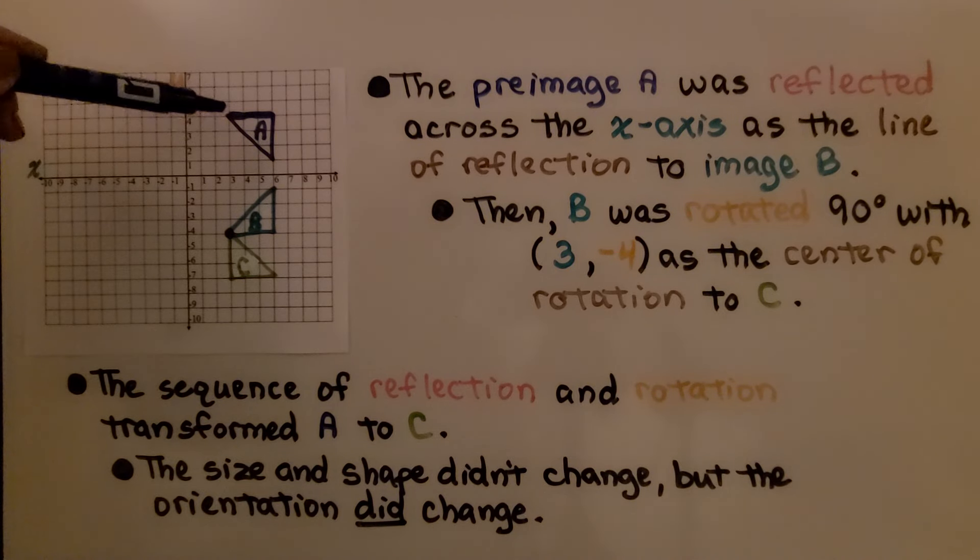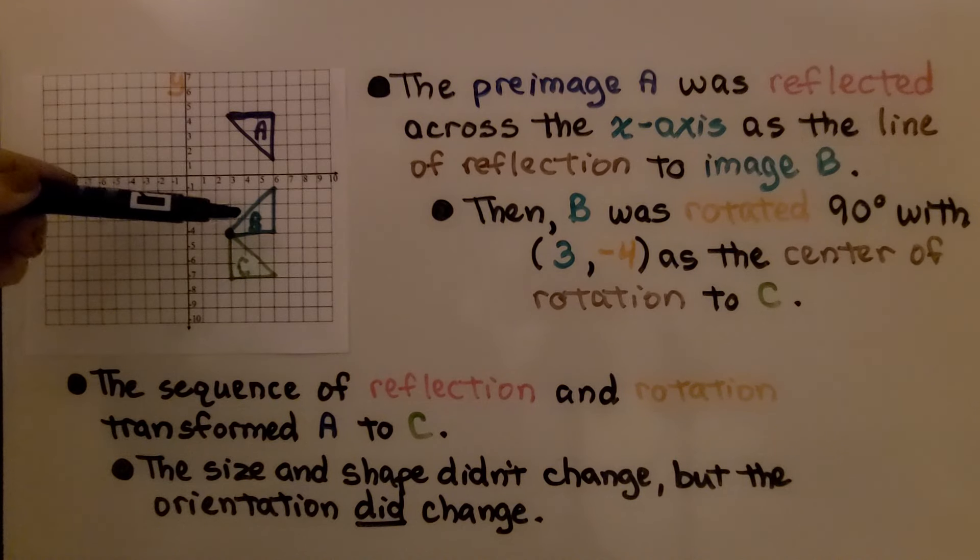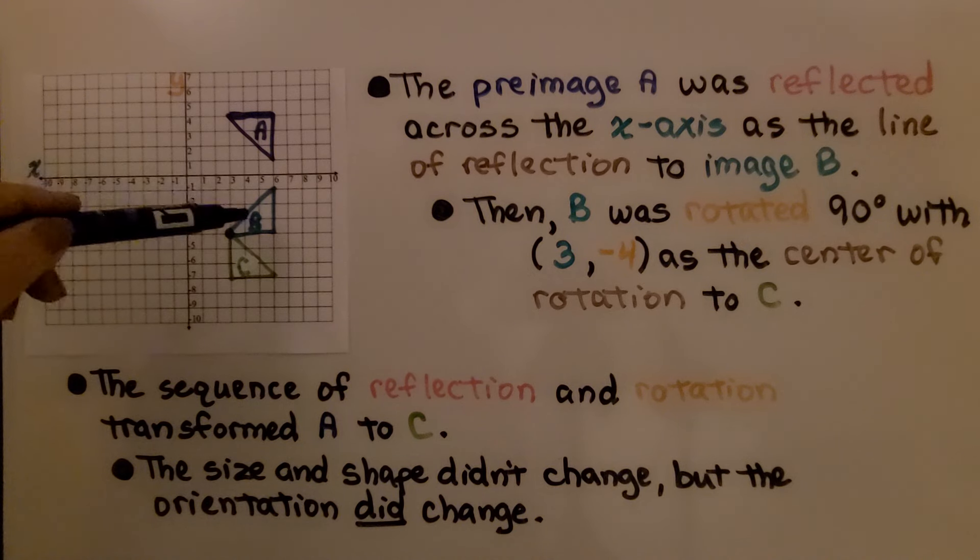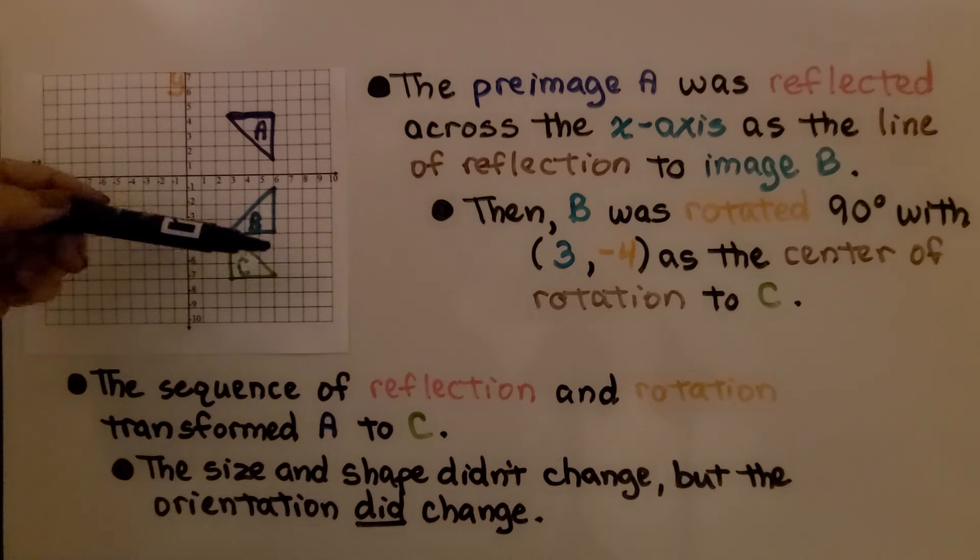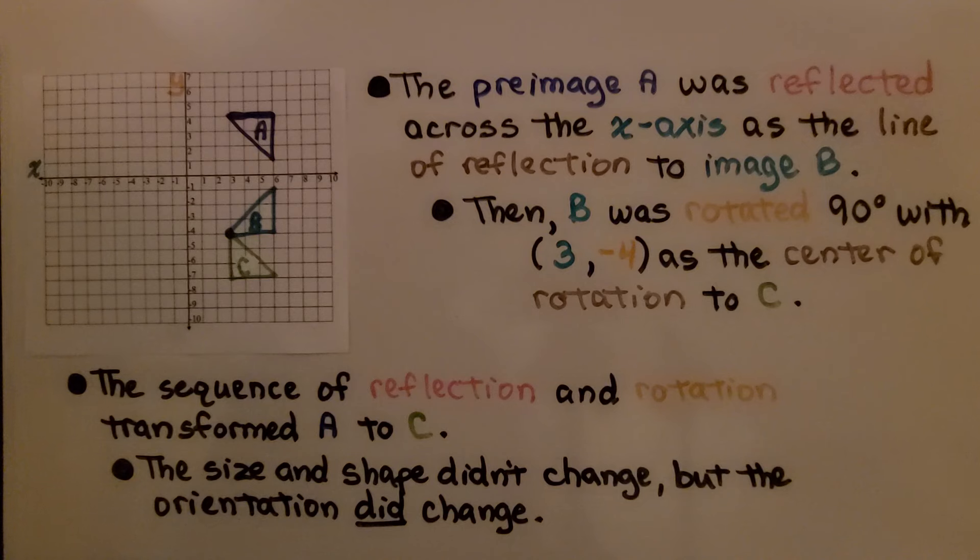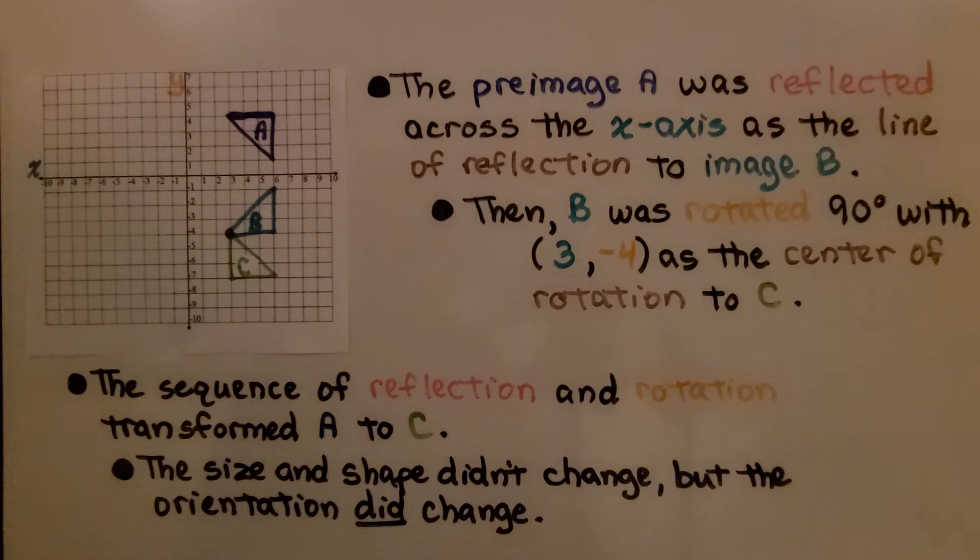Here we have pre-image A and it was reflected across the x-axis as the line of reflection to image B. Then B was rotated 90 degrees with the point (3, -4) as the center of rotation to triangle C. The sequence of reflection and rotation transformed A to C. The size and shape didn't change, but the orientation did change.